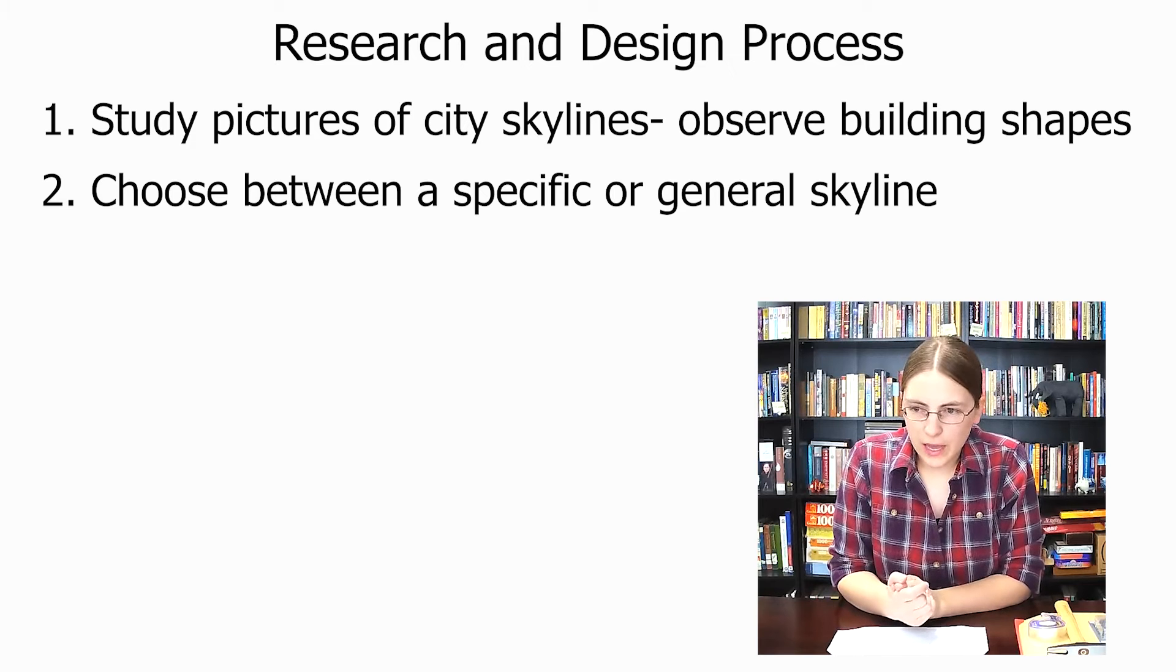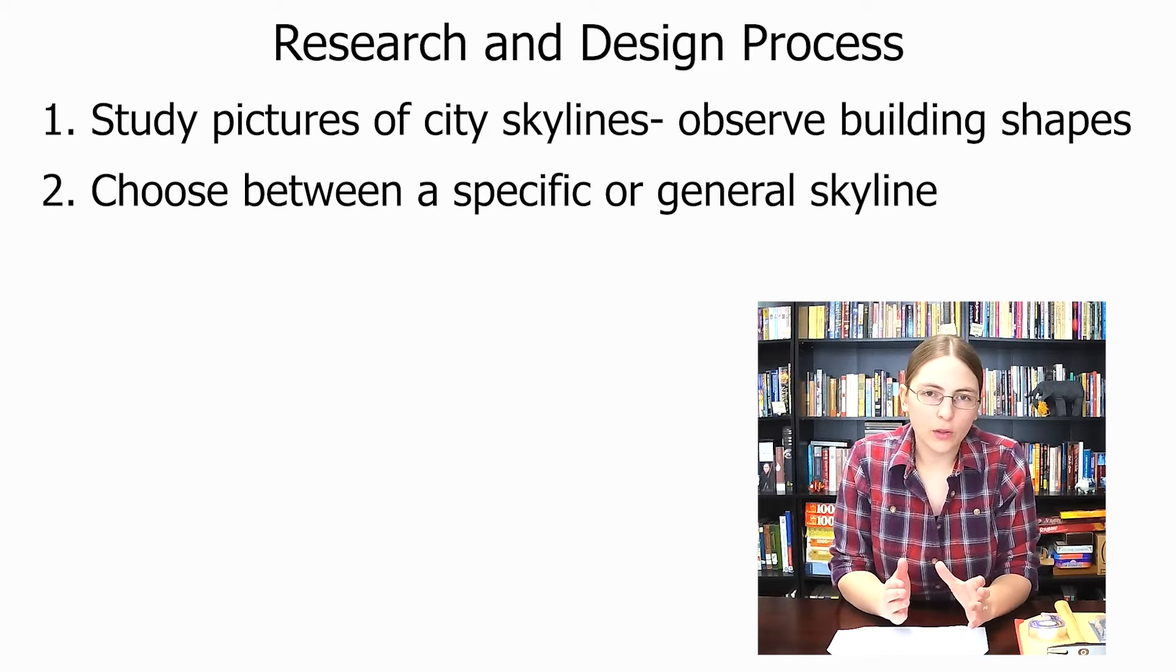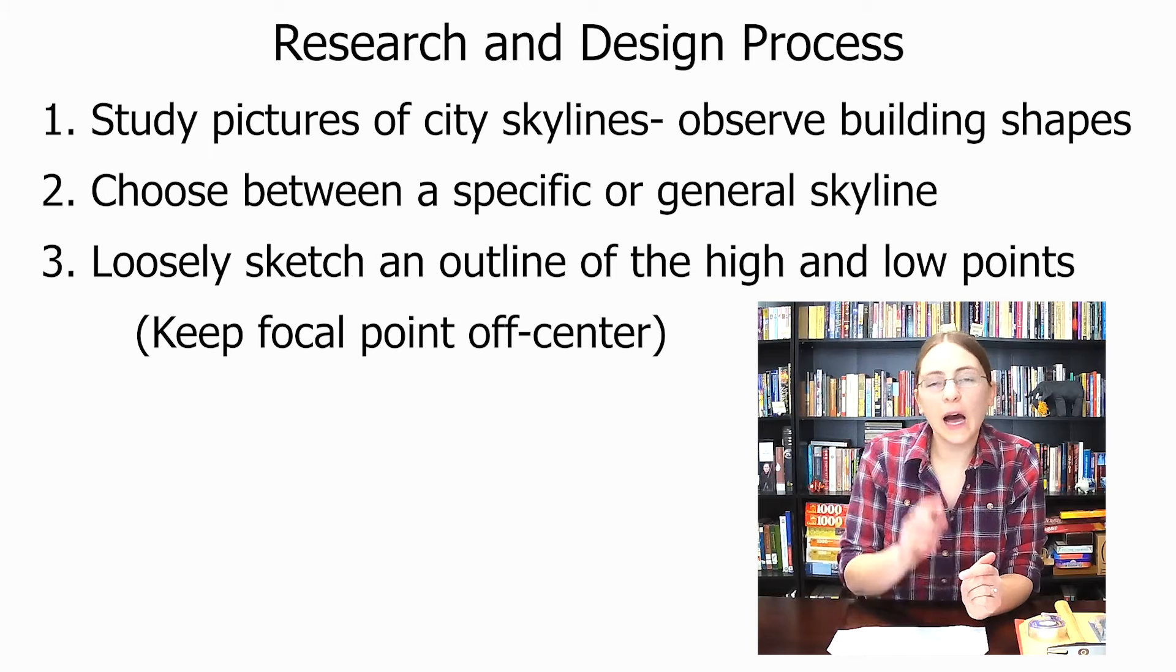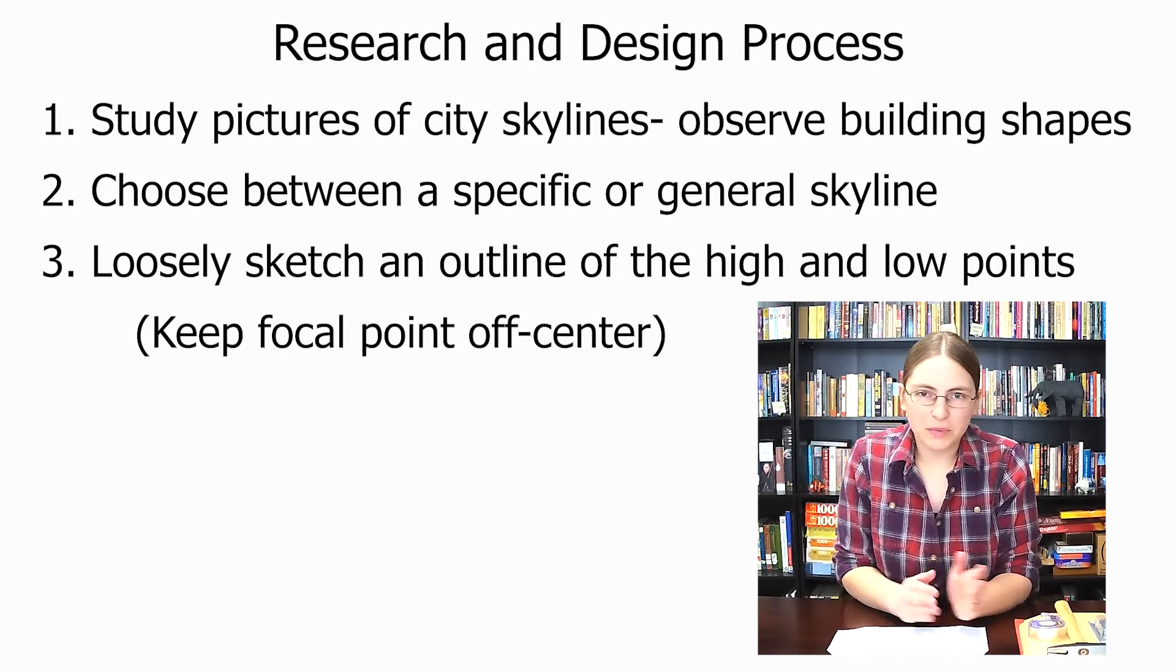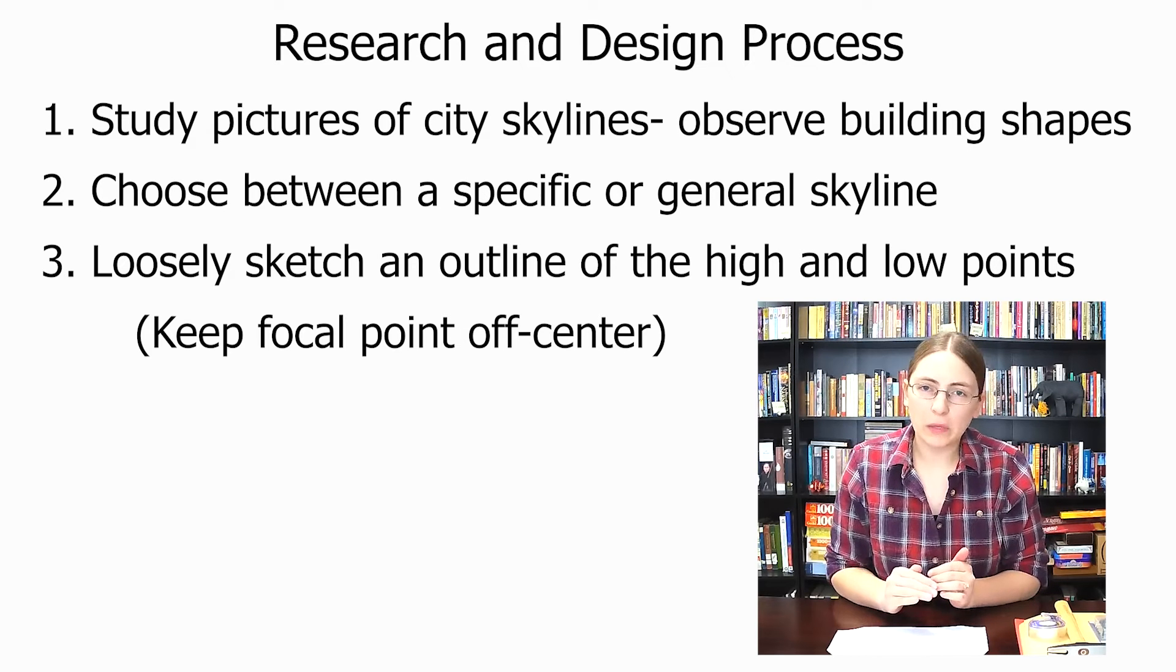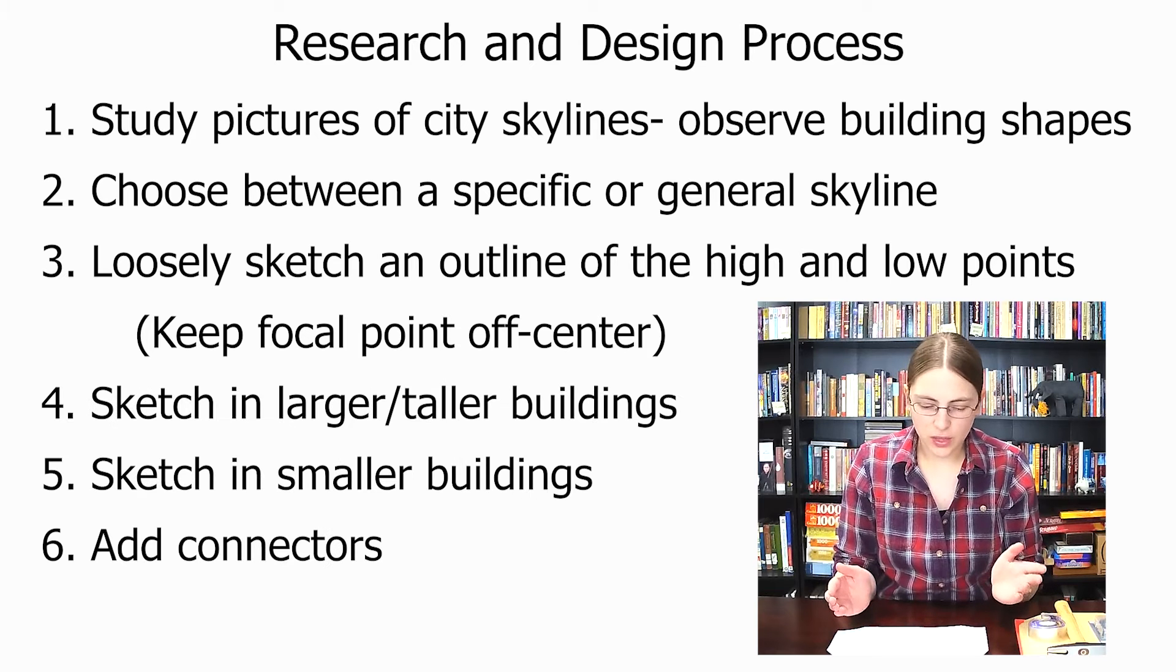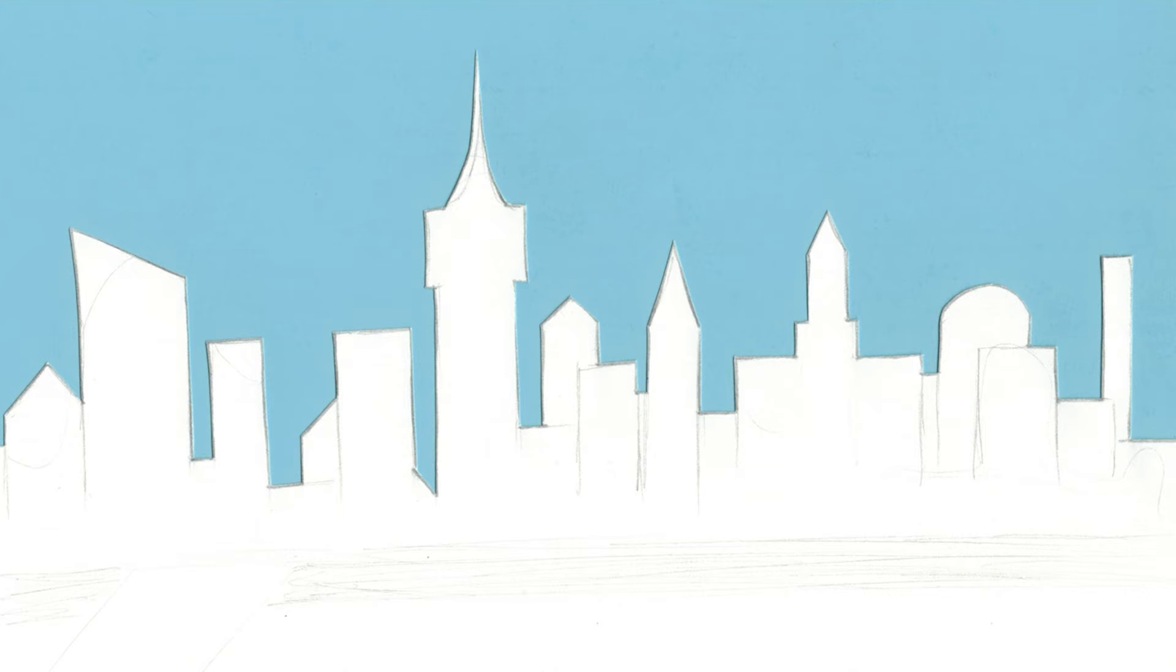So when you're doing your sketch, you want to create sort of a general outline. I actually started with a very loose sketch that was just the high and low points. So it was very squiggly and not building shaped at all, but it just identified where I want the tall buildings, where I want the short buildings. From there, I was able to fill in the actual buildings and I'll show you on the screen here what my design looks like and which buildings I drew in which order.